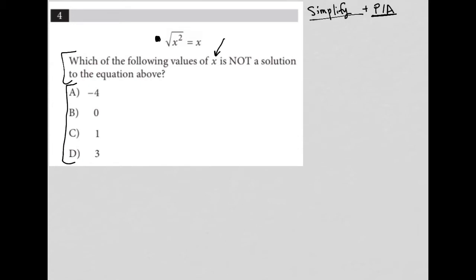So I can just plug all these things in. So when I do that, if I started off with answer choice A, I'd have the square root of negative 4, right, squared equals negative 4. Well, negative 4 squared is 16. The square root of 16 is positive 4, not negative 4. And therefore, A is our correct answer because it's not a solution.